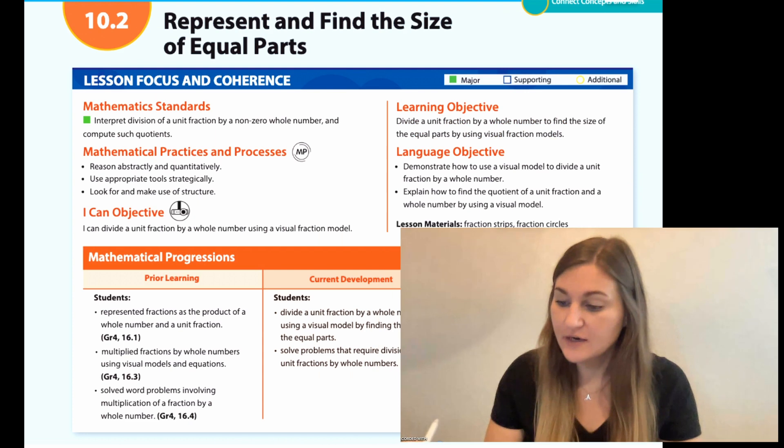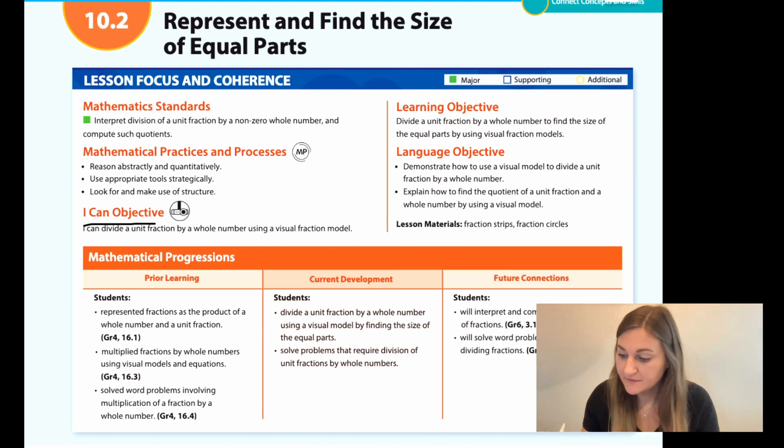Hi, I'm Natalie Rhodes and this is IntoMath's 5th grade, Module 10, Lesson 2. Let's start off by going over the I can objective. It says I can divide a unit fraction by a whole number using a visual fraction model. And the learning objective is divide a unit fraction by a whole number to find the size of the equal parts by using visual fraction models.